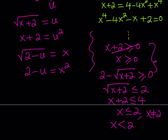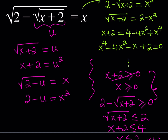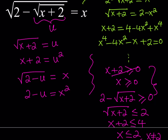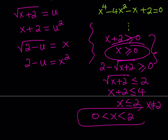Can x equal 0? Let's explore that. If x equals 0, I plug in 0 and get square root of 2. The square root of 2 minus square root of 2 does not equal 0, so that doesn't work either. Therefore x cannot be 0, so this turns into x is greater than 0. Put it all together and you get the condition: whatever solutions we get, we have to make sure they satisfy this inequality, which says x is between 0 and 2, not inclusive.